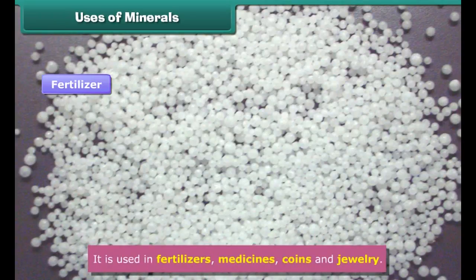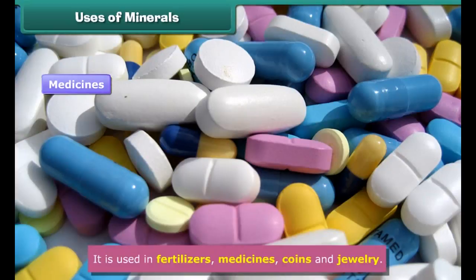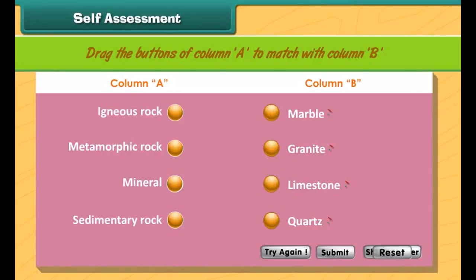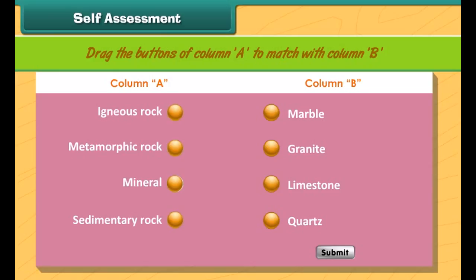Uses of minerals — minerals play an important role in our lives. Minerals are used in the production of cement. They are used in making glass, electrical components, and optical lenses. These are also used in fertilizers, medicines, coins, and jewelry.